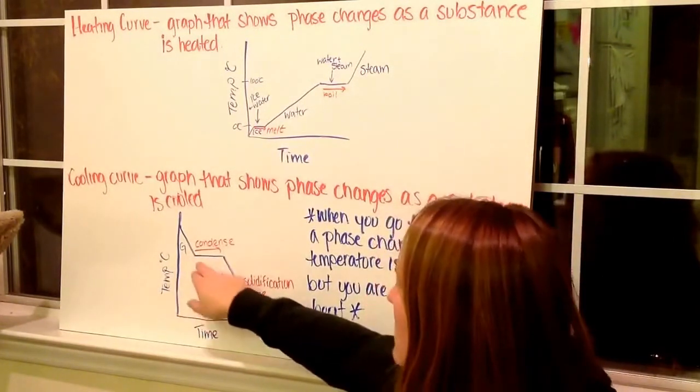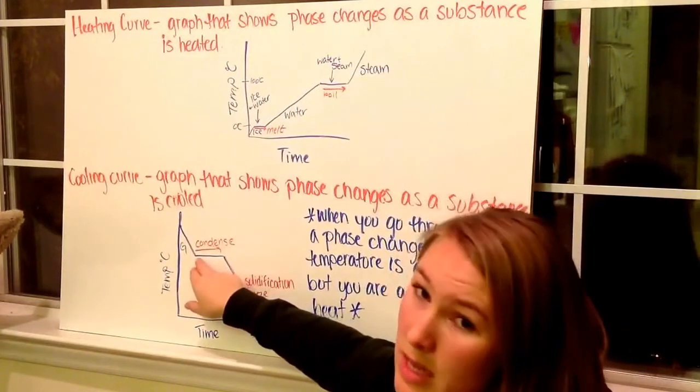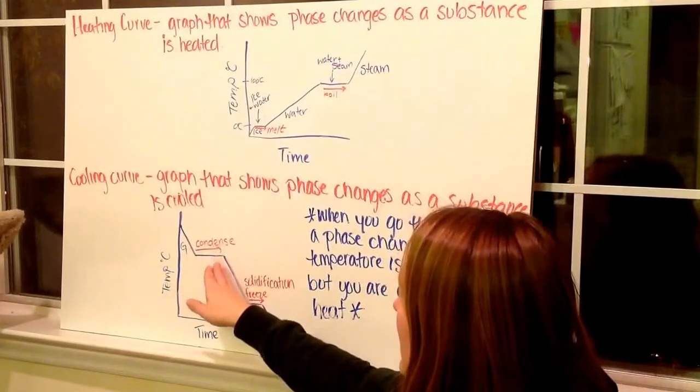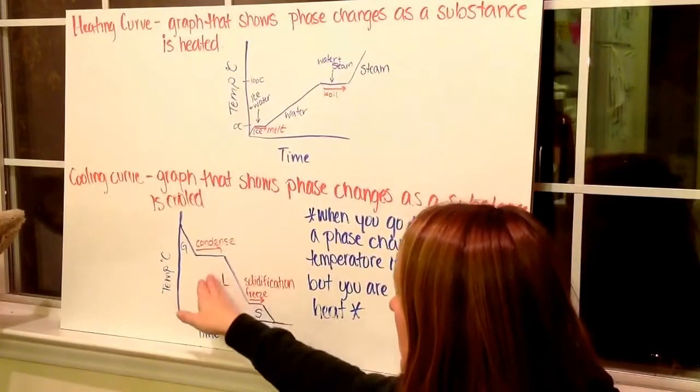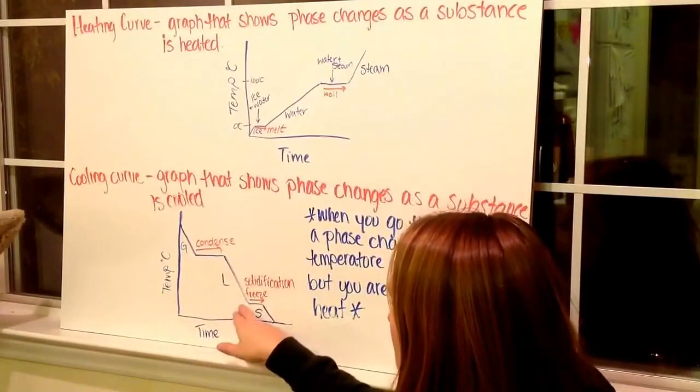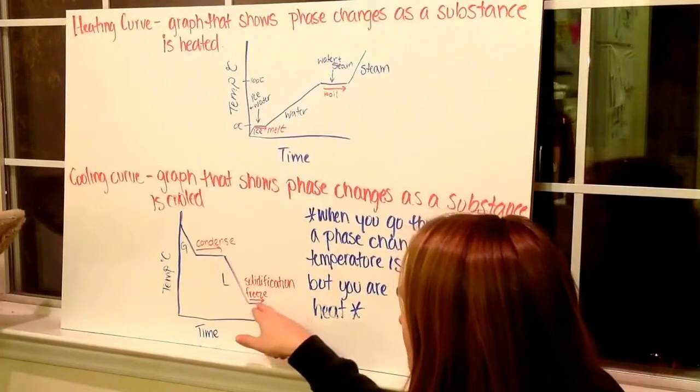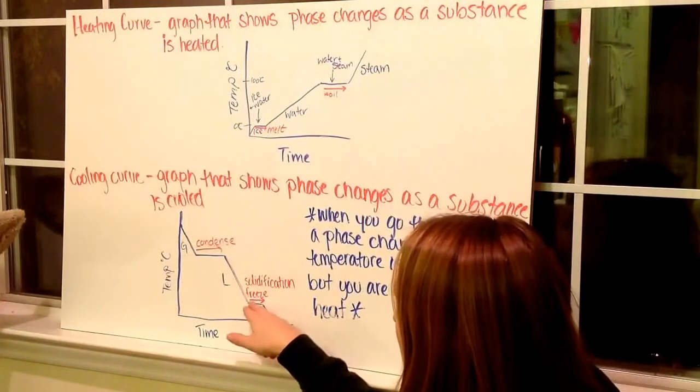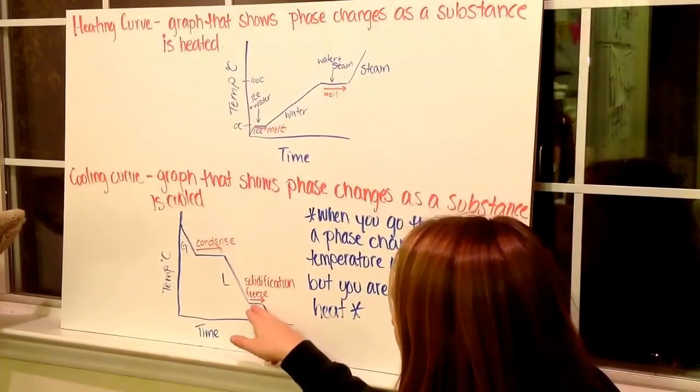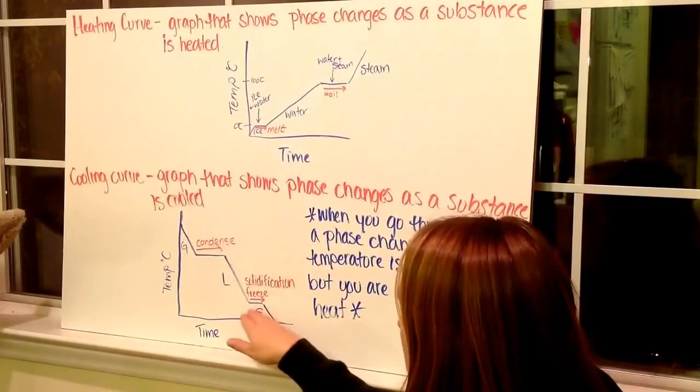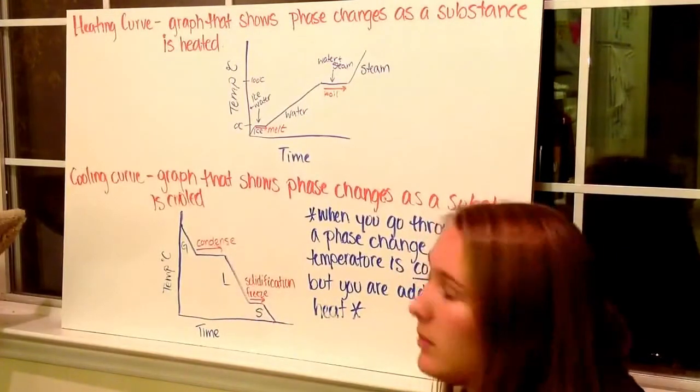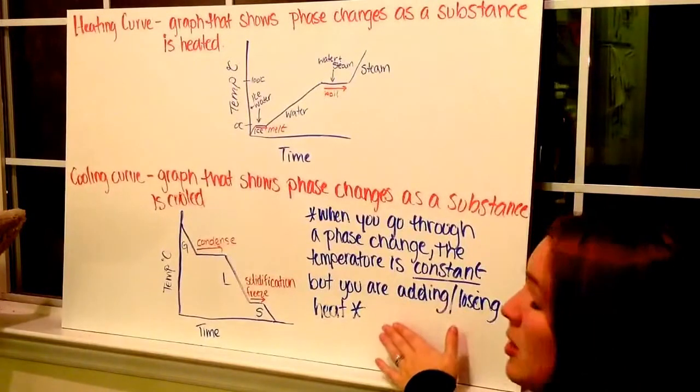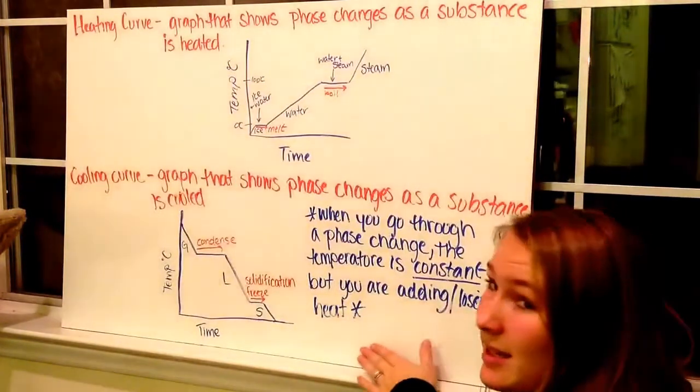Here, it's changing from a gas to a liquid. So all along this line, there's an equilibrium established between gases and liquids. And here, it condenses. Then my temperature decreases. It stays as a liquid as it decreases, and then hits the next point. Here, we have an equilibrium between liquid and solid. And it starts to freeze. So the freezing action occurs, the equilibrium exists, and it's at one constant temperature. And then it decreases again. Notice that when you go through a phase change, the temperature is constant, but you are adding or losing heat, not temperature.